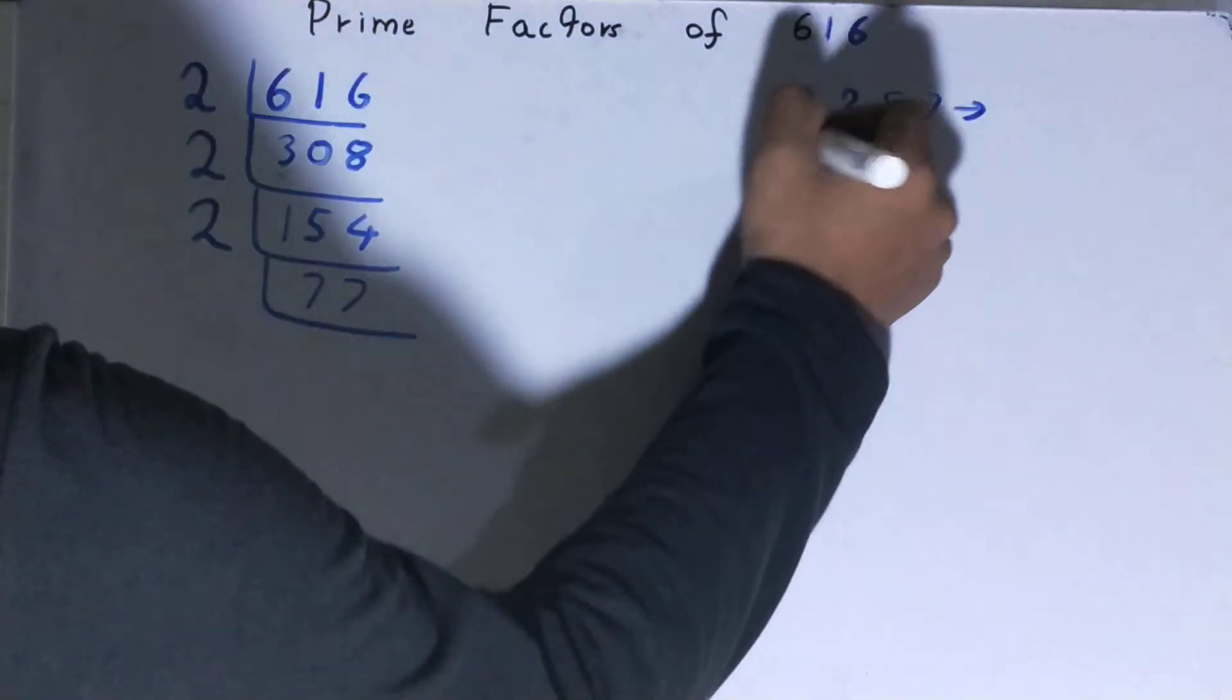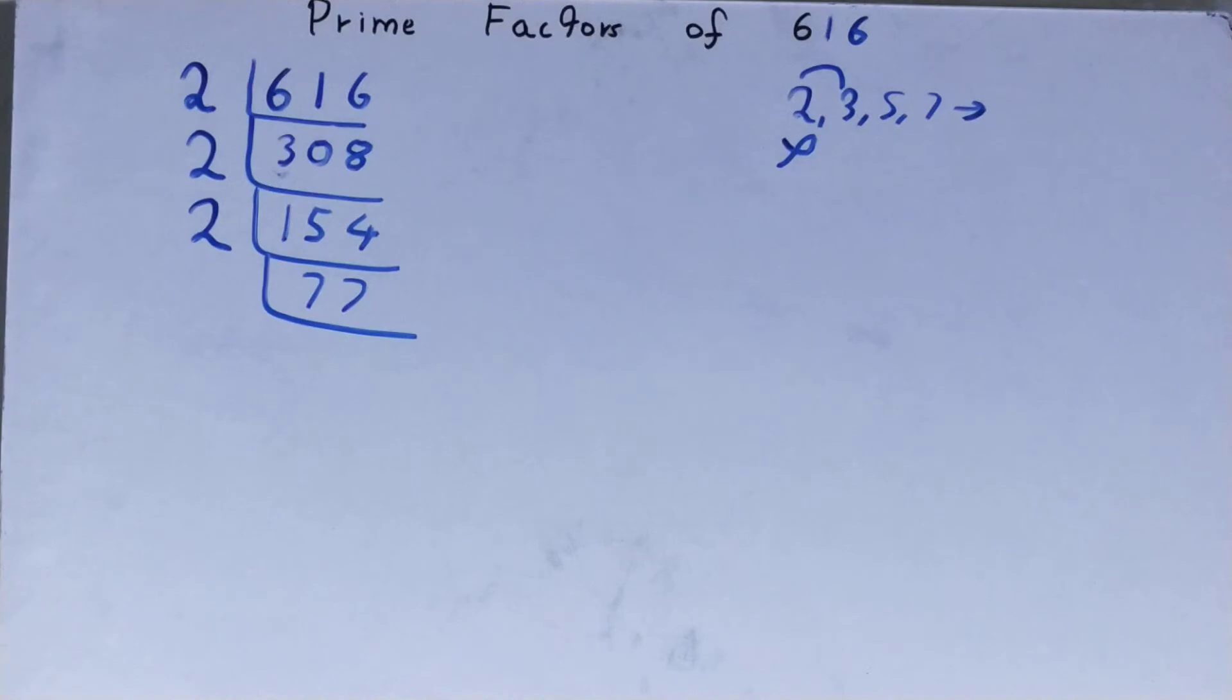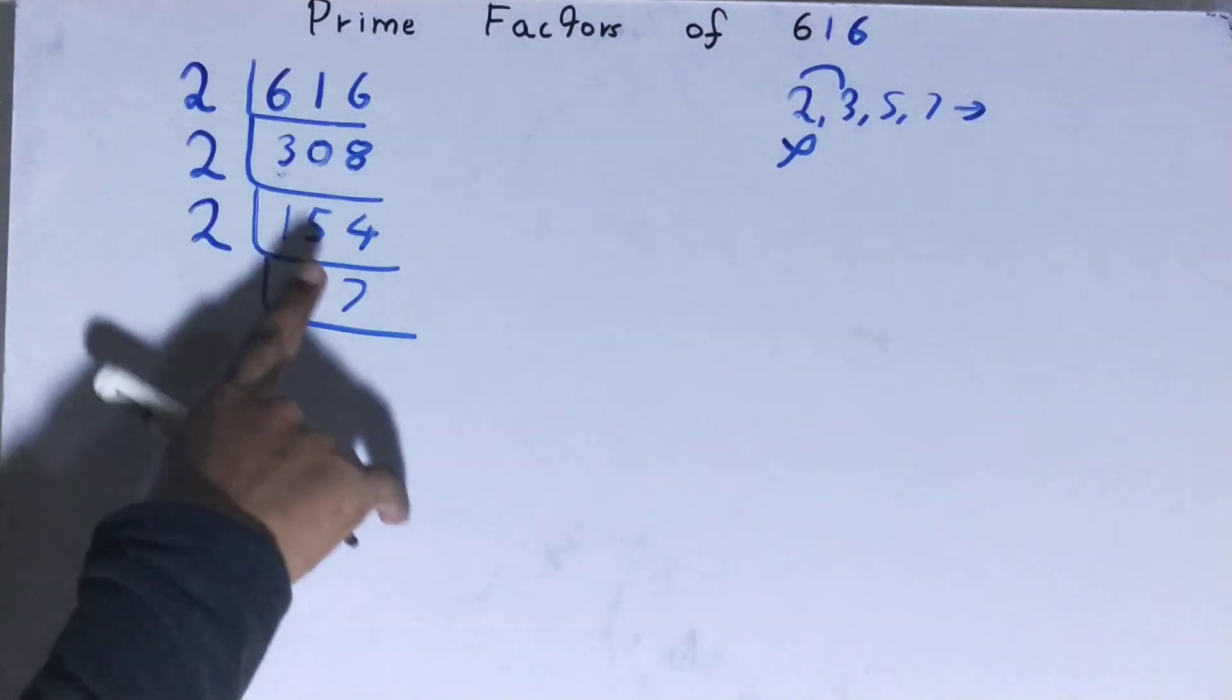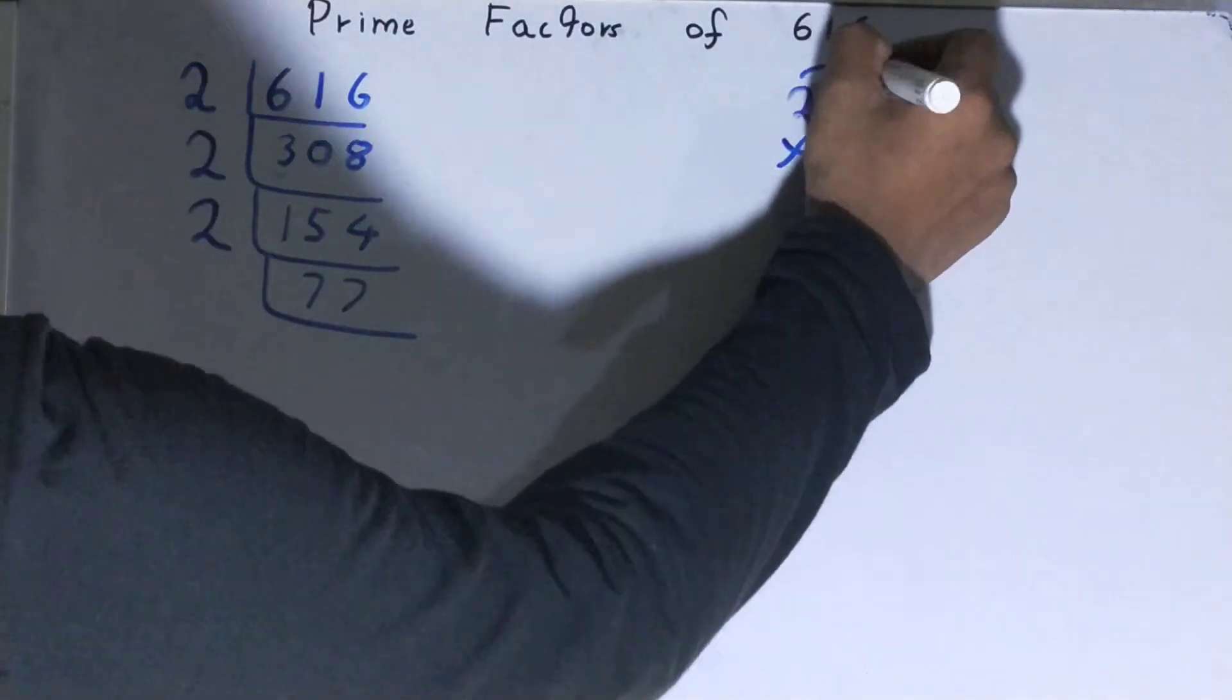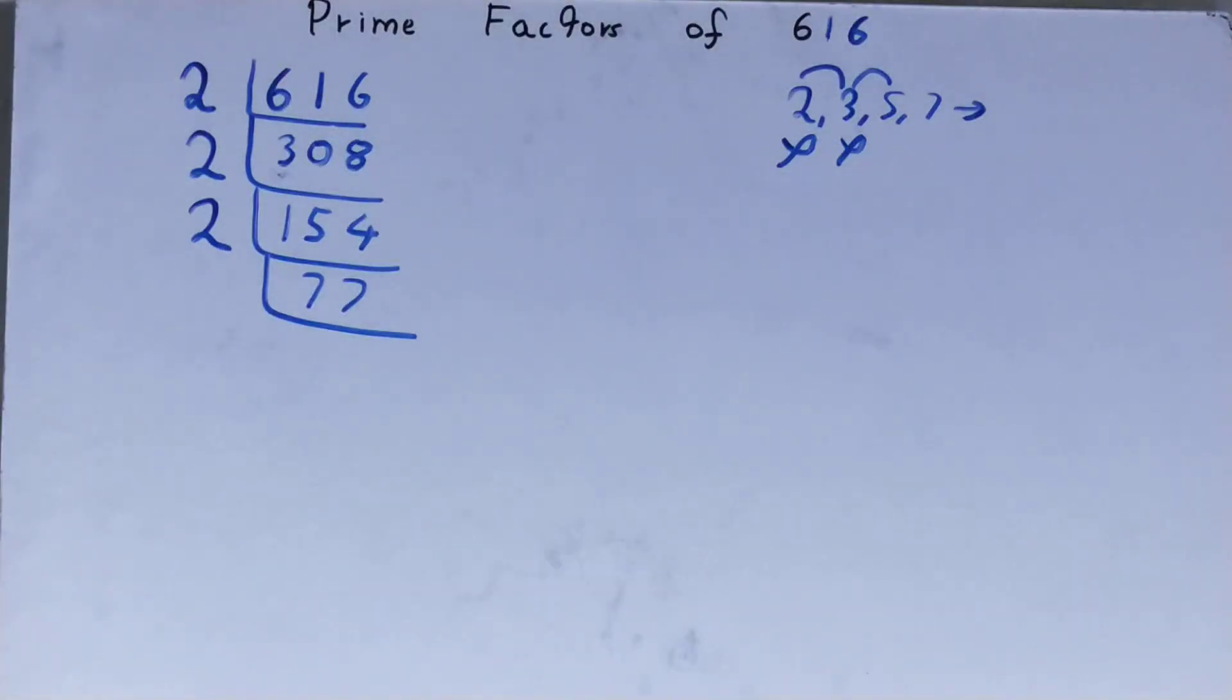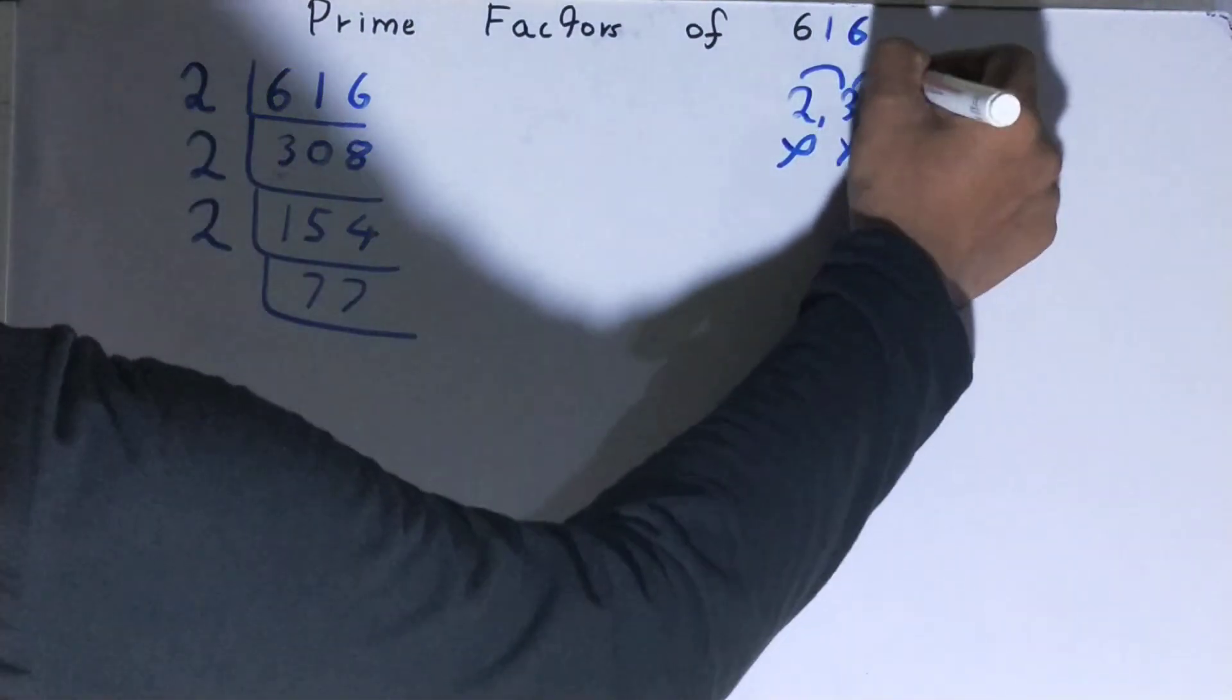So what we'll do, we'll go to the next lowest prime number, that is 3. Is it divisible by 3? No, it is not divisible by 3. Let's check it with 5. The last digit is neither 5 nor 0, so it is also not divisible by 5.